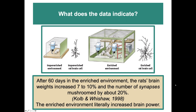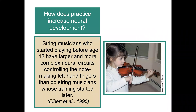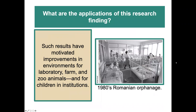This is pretty powerful evidence from these animal models. How does practice increase neural development? String musicians who start playing before age 12 have larger and more complex neural circuits controlling the note-making left-hand fingers than string musicians who start later. That's evidence that practice matters and produces changes in neural circuitry.